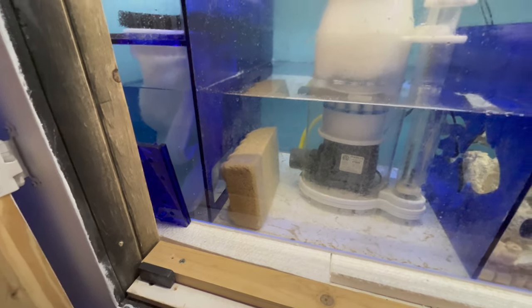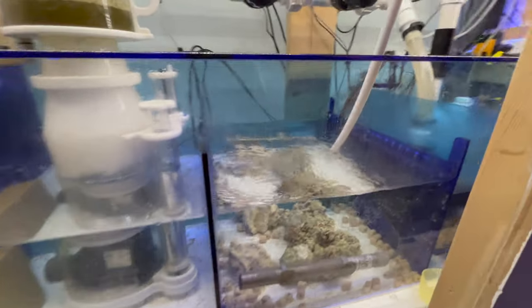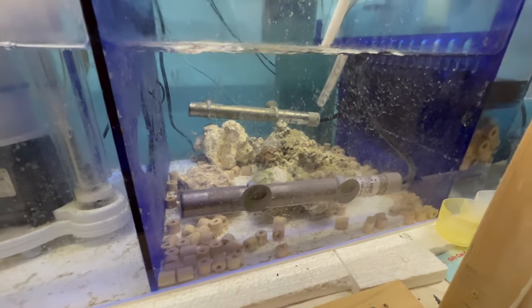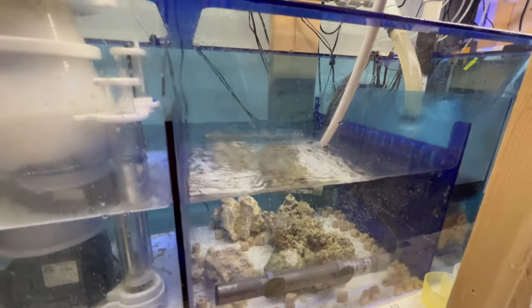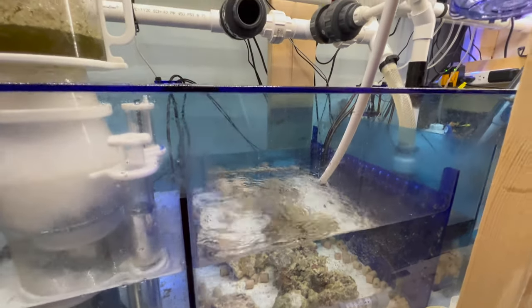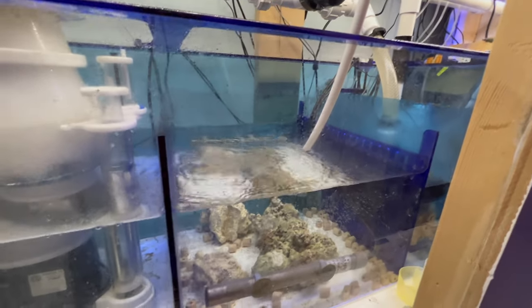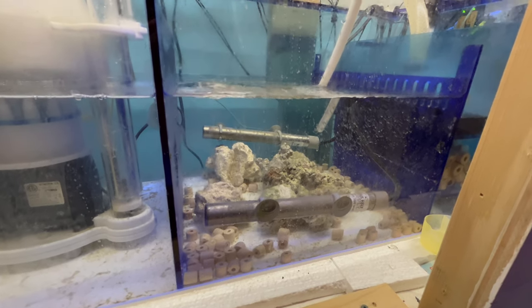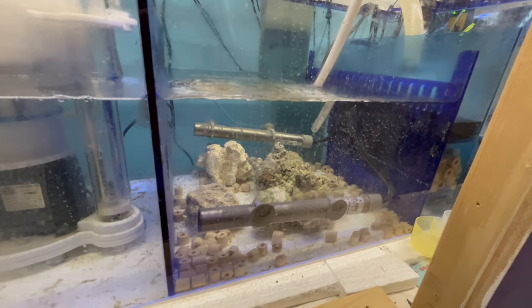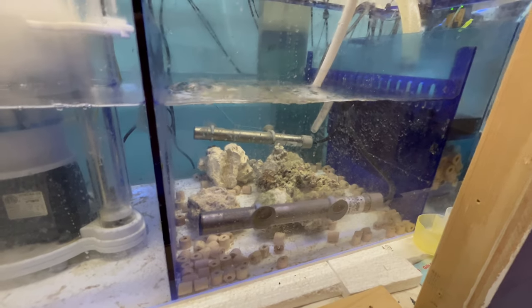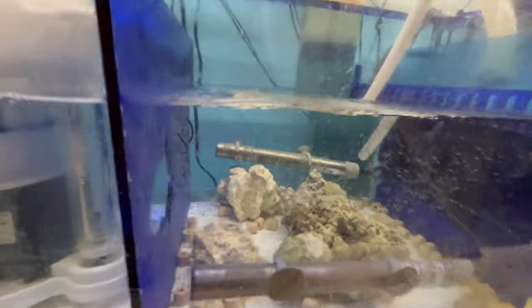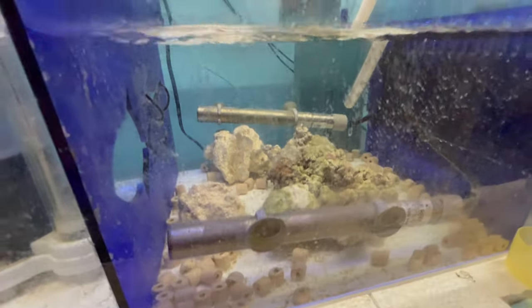So water comes through there, it goes through our skimmer. And here, this is our center chamber. It was a refugium. I gave up on the refugium. The refugium made nothing but a mess here in this chamber. So I switched over to dosing another product. As of right now, all I have in here is two 300 watt titanium heaters and it is controlled by an Inkbird. And just some rock, extra rock I had and it's just in there with some ceramic rings.